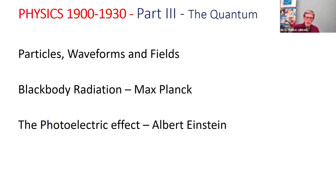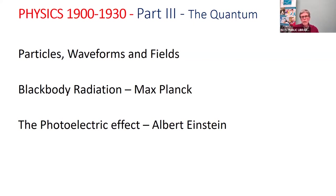One solution to black body radiation involved Max Planck, and another involved Albert Einstein, who was much more confident about his approach than Planck. Then there's the whole issue of the photoelectric effect: if light of the appropriate frequency and energy is shone on a metal plate, it will loosen electrons, which can then pass a current. The question was about the nature of the incident light — was it a particle or a waveform? We'll see how that worked out.